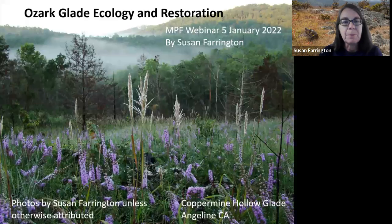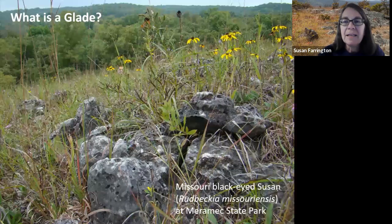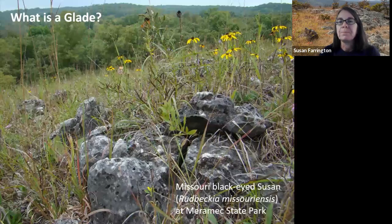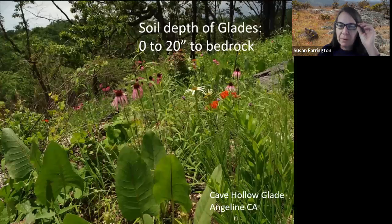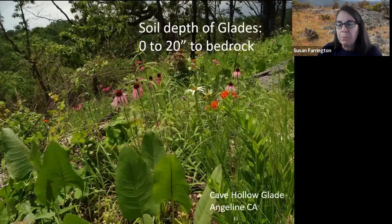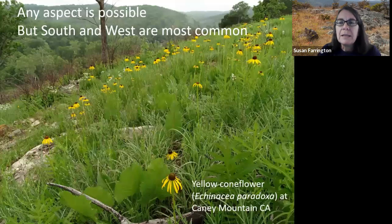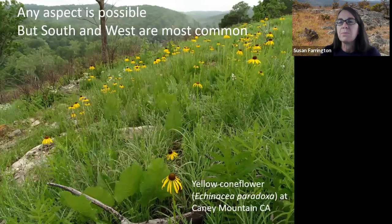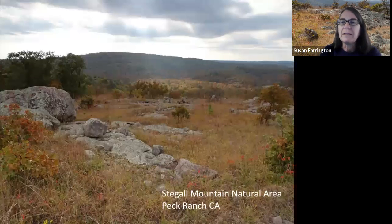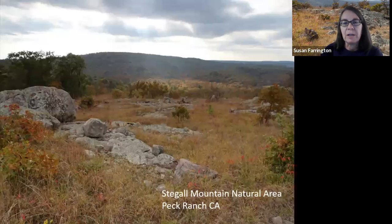What is a glade? A glade is a natural opening in the woods where the bedrock is very close to the surface. Depending on the substrate, the soil can be very rich, but its depth is relatively shallow before it hits bedrock below. Although glades can be found on any aspect, they are most often found on exposed slopes facing southwest where the summer heat sears them. They are also found on the tops of bluffs and mountains. The key feature is rock outcropping and shallow soil.